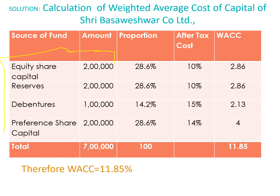That is: equity share capital rupees 2 lakh, reserves 2 lakh, debentures 1 lakh, preference share capital 2 lakh. You have to make one row called total and sum up the amount column, which will come to rupees 7 lakh.